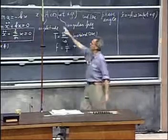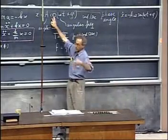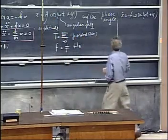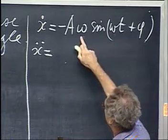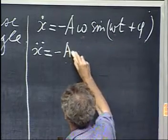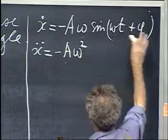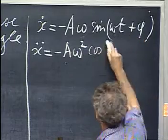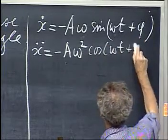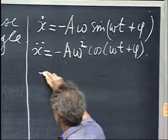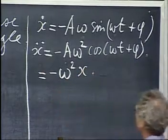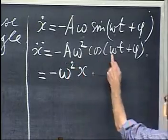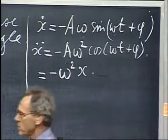Of course, I could have started off here with a sine curve. I hope you realize that. I just picked the cosine one. x double dot. Now I get another omega out, so I get minus a omega squared. The derivative of the sine is the cosine, cosine omega t plus phi. And that is also minus omega squared times x, because notice I have a cosine omega t plus phi, which itself is x.